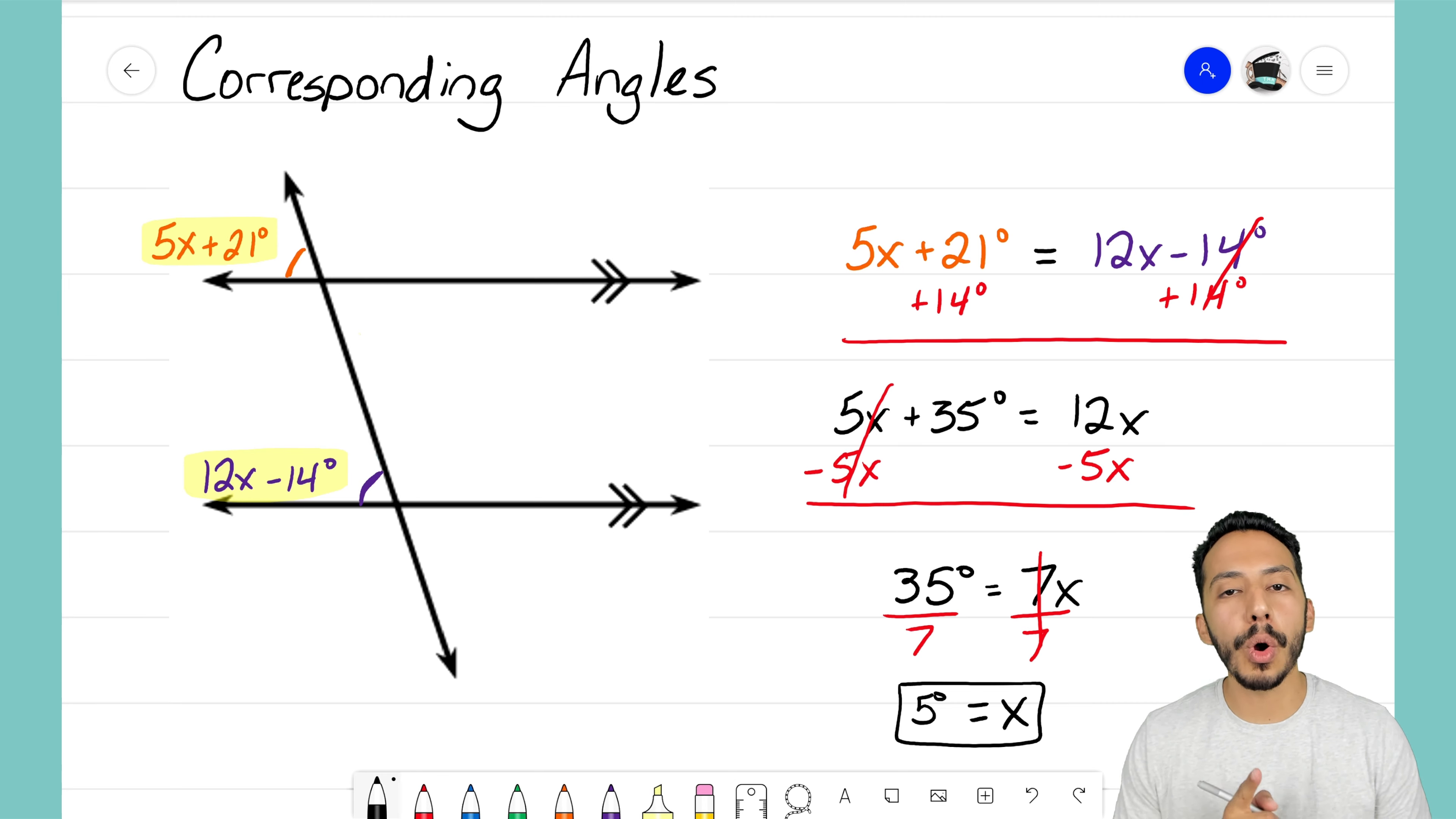So that's how we use corresponding angles to help us solve for an unknown variable in our diagram where two parallel lines are being cut by our third transversal line. It's that Math Magician, and I'll see you on the next video.